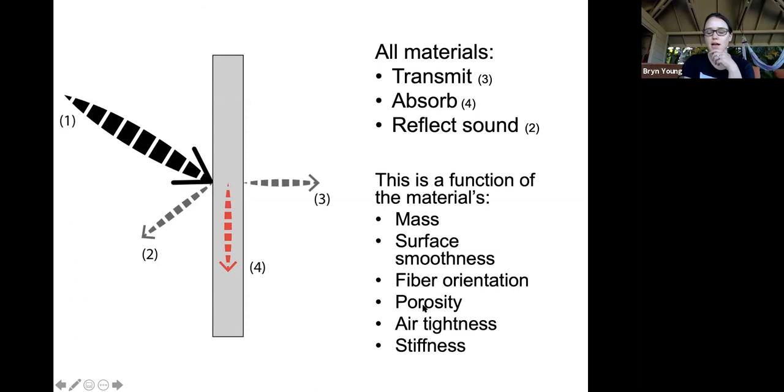Porosity. I talked a little bit about that in the smoothness. If it's more porous, more sound can go through it and be absorbed. Air tightness. Air transmits sound very well. So, if it's really air tight, sound can't pass through as easily.